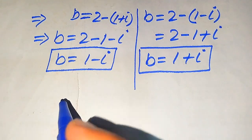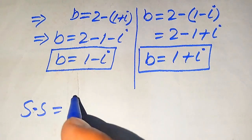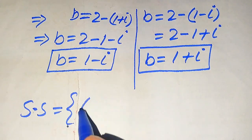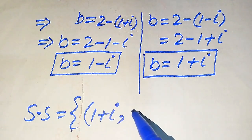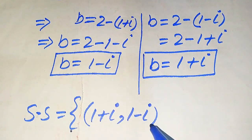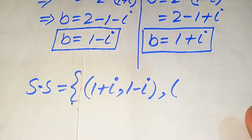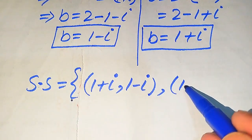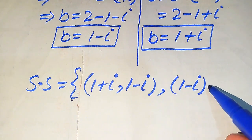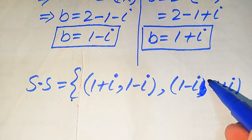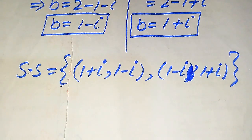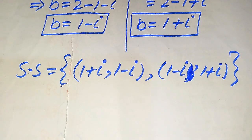So finally, the solution set of the given problem is: when a equals 1 plus i, b equals 1 minus i; and when a equals 1 minus i, b equals 1 plus i. This is the final answer. Thank you so much for watching this video — please subscribe to my channel for more exciting videos.